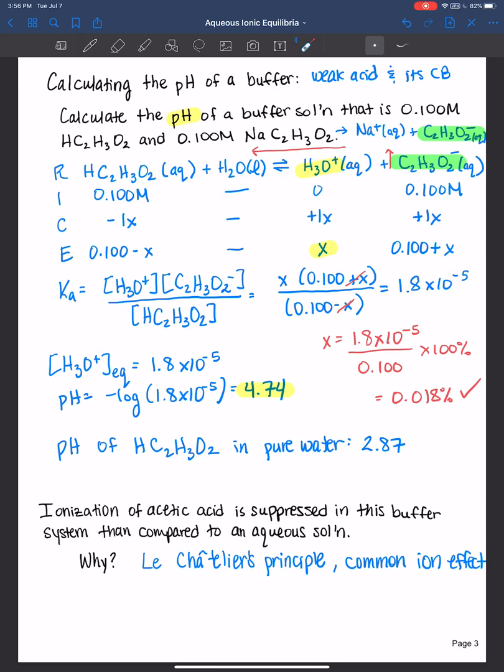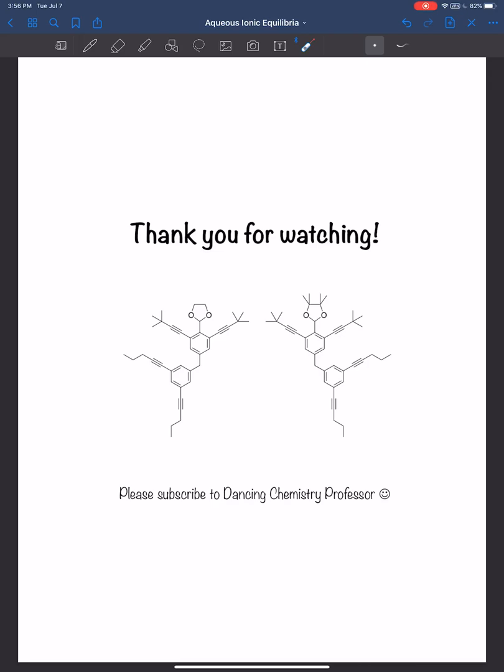All right. So that's how you calculate the pH of a buffer system. You can go ahead and practice using your RICE tables to do that. You've worked with RICE tables before in my class. And so now you can use it for solving for the pH of a buffer system. Thank you all for watching, and I'll see you next time.